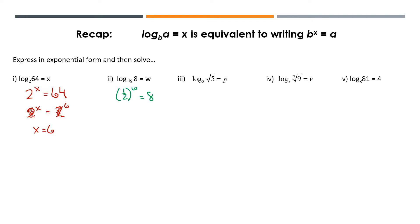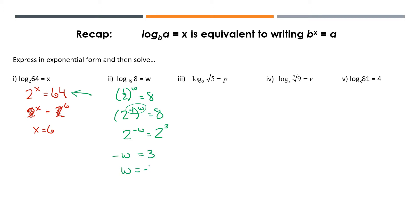Fractions are always a little difficult to work with, so let's first get rid of the fraction. 1/2 is the same as 2 to the power of negative 1, to the power of w equals 8. This is the power of a power law. So this is 2 to the power of negative w equals 2 to the power of what? 8 is the same as 2 to the power of 3. My bases match, so I can ignore them and look at the exponents. That gives me negative w equals 3, or w equals negative 3.